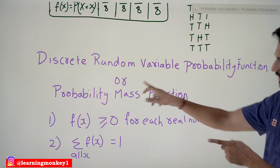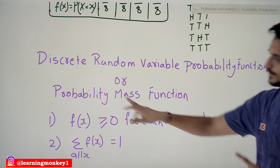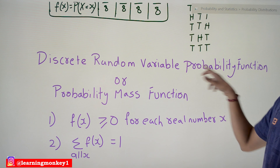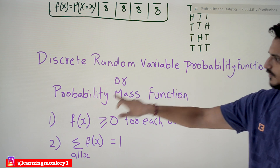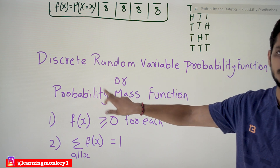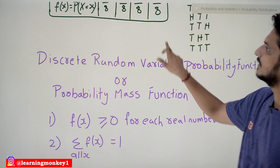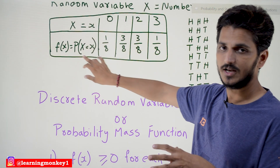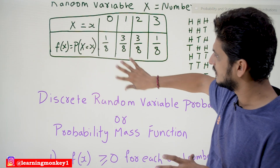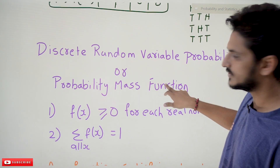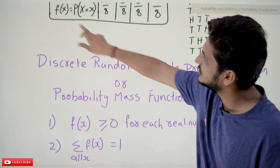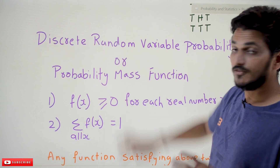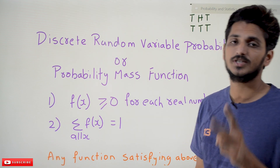Now, coming to understand discrete random variable probability function, or what we call the probability mass function. The function f(x) provides the probability values. We call f(x) a probability mass function if it satisfies two conditions.